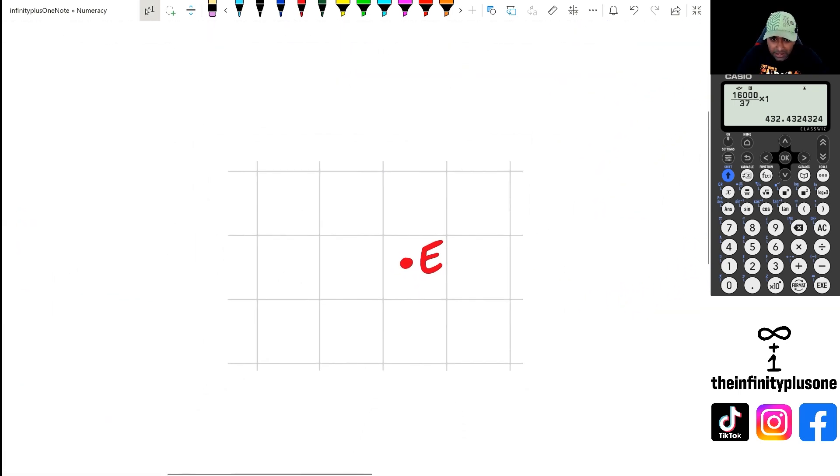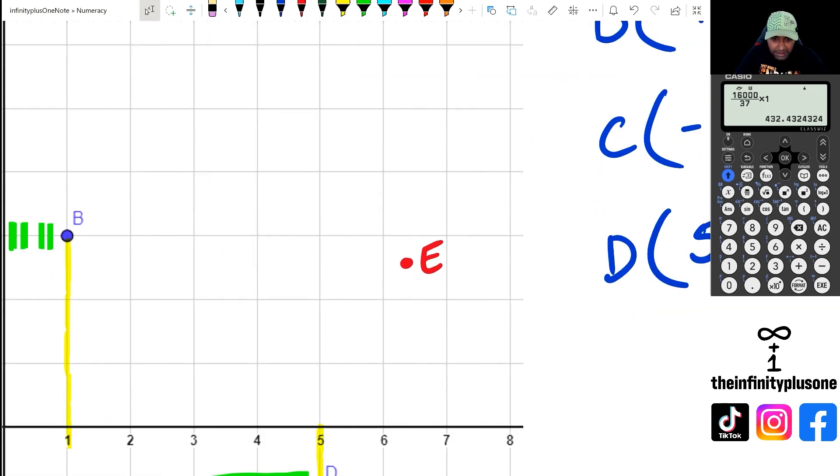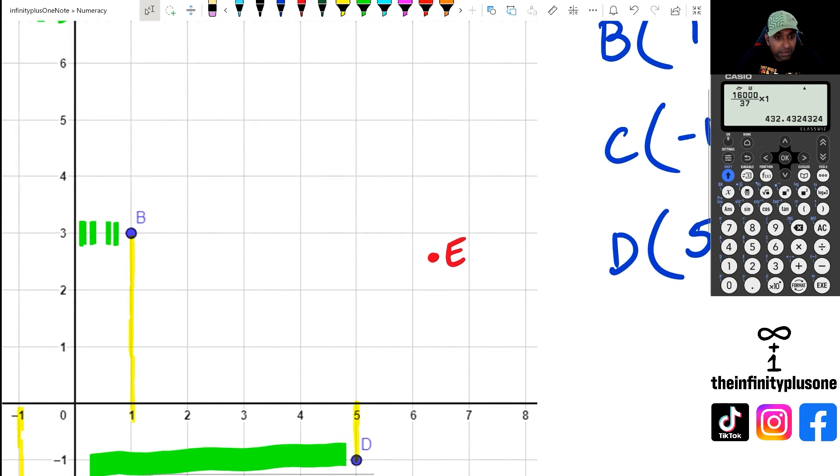zoom right in, you can kind of see the grid lines there. So with point E, I would be thinking what is it? If we have a look at this, point E roughly, it's around there which is probably going to be 6.4.